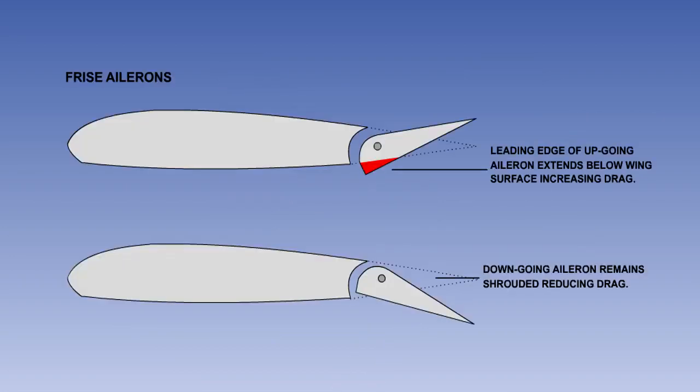Frise-type ailerons achieve the same balance in drag by having the leading edge of the control surface designed so that it extends below the lower surface of the wing on the up-going aileron, thus increasing its drag. The down-going aileron leading edge remains shrouded and produces less drag.